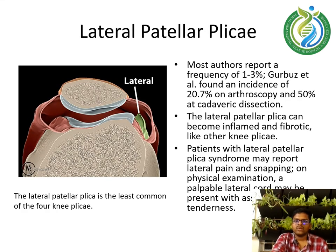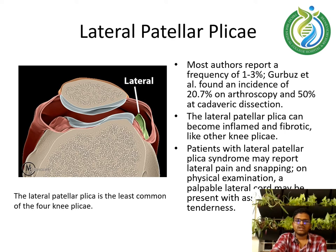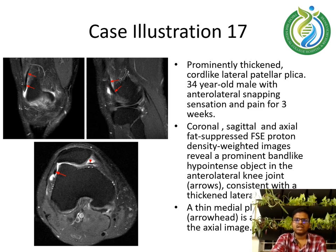The lateral patellar plicae is the least common of the four knee plicae. Most authors report a frequency of 1–3%, though Gurgus et al. found an incidence of 20.7% on arthroscopy and 50% at cadaveric dissection. The lateral patellar plicae can become inflamed and fibrotic like other knee plicae; patients may report lateral pain and snapping on physical examination, and a palpable lateral cord may be present with associated tenderness. Case illustration 17: a 34-year-old male with anterolateral snapping sensation and pain for 3 weeks. Coronal, sagittal, and axial fat-suppressed FSE proton density weighted images reveal a prominent band-like hypointense structure in the anterolateral knee joint shown by the arrows, consistent with a thickened lateral plicae. A thin medial plicae shown by the arrowhead is also visible on axial images.